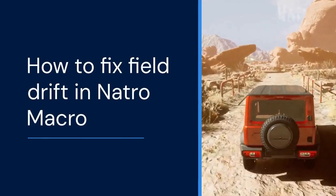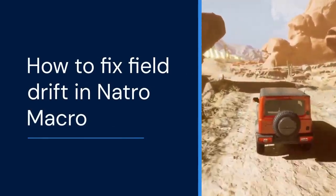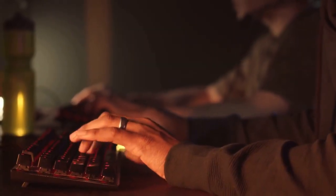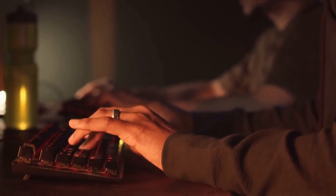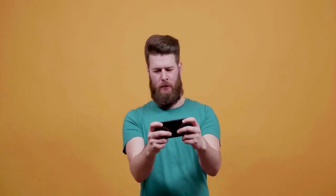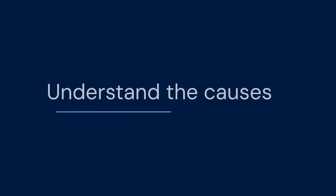Hello everyone. Today we're tackling a common issue in Natro Macro: Field Drift. Field drift happens when your macro slowly moves away from the intended field. This makes your collection inefficient and can even cause your character to get stuck. Don't worry, it's fixable. Let's dive into how to fix field drift in Natro Macro.